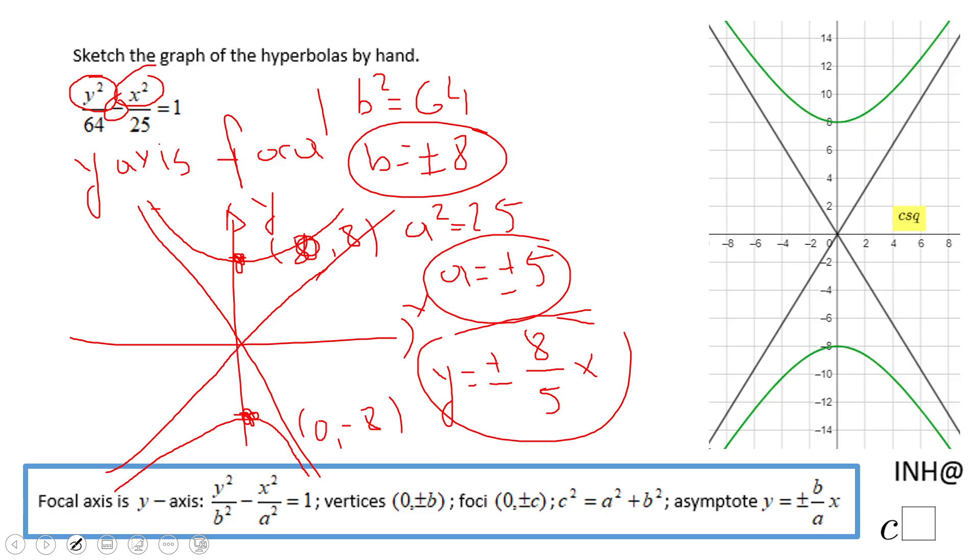If you need to find the foci, don't forget to add a² and b². In this case, c² will be 64 plus 25, which is 89. c will be plus or minus square root of 89, which tells you the foci should be somewhere here inside the hyperbola.